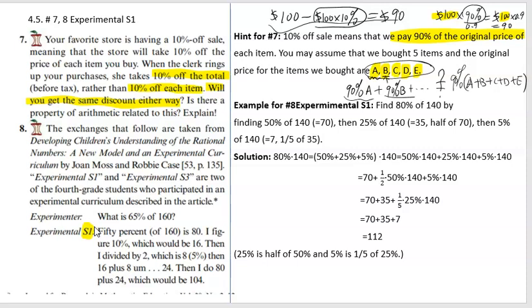For number 8, again you only need to do S1. They're asking us to do a simple example. For instance, if we want to find 80% of 140, instead of doing 80% directly, we could do 50% because 50% means half of 140, which is easy to calculate—that's 70. The thinking process is: I can do 50%, and then I can do another 25%, because 25% is half of the 50%.